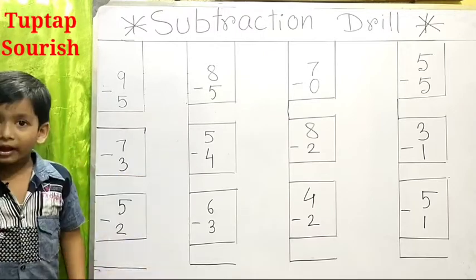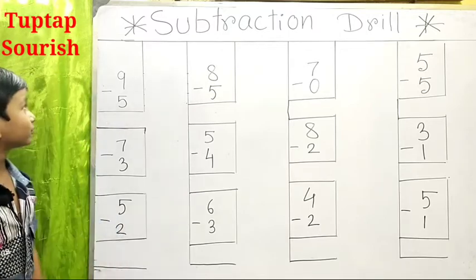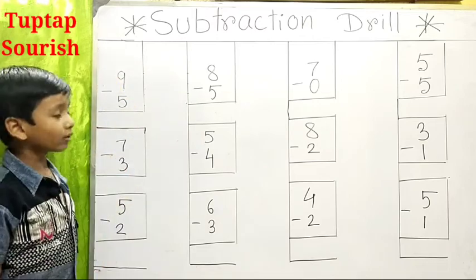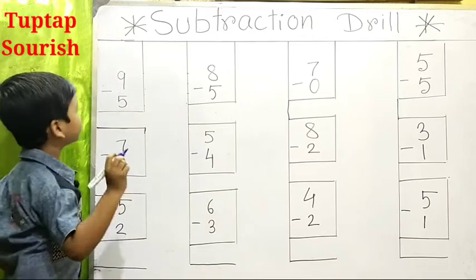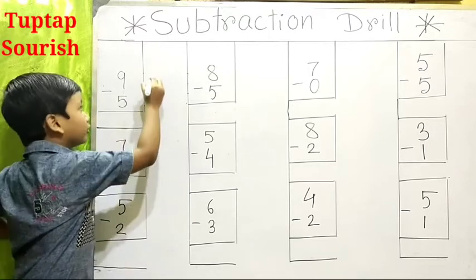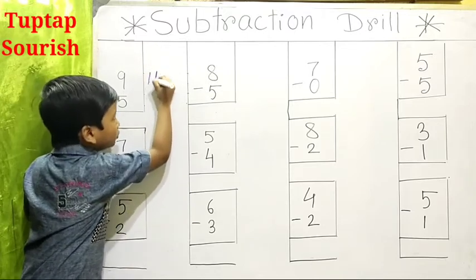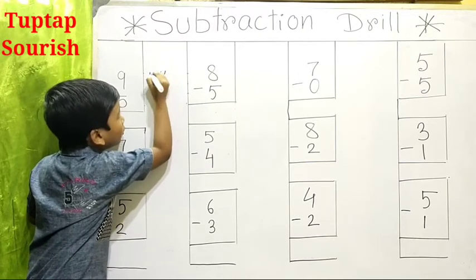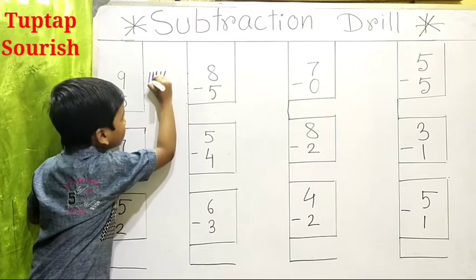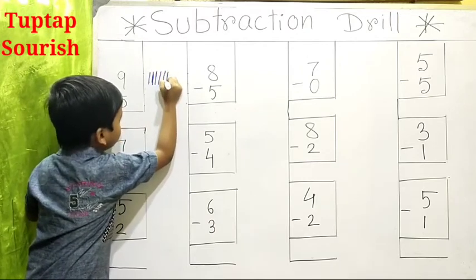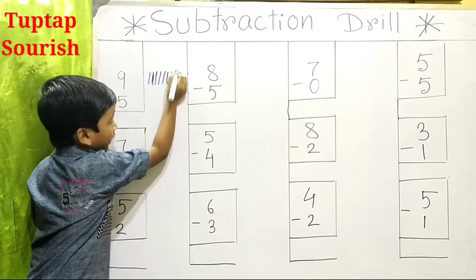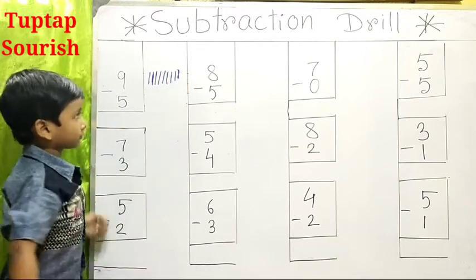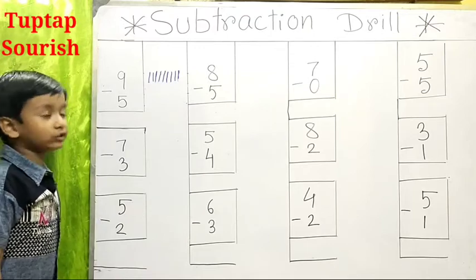So let's do 9 minus 5. Think your father gave you 9 chocolates. Let us draw lines: 1, 2, 3, 4, 5, 6, 7, 8, 9. Think your father gave you 9 chocolates.